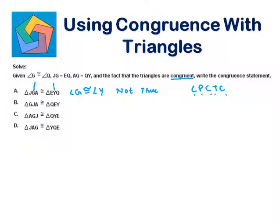Looking at the C part, again G is congruent to Y. In the D part, again G is congruent to E. So we can eliminate these options.